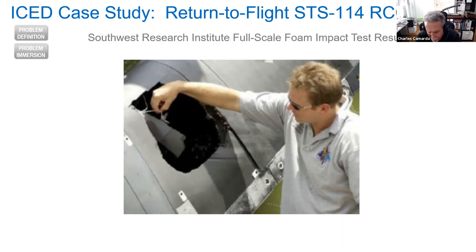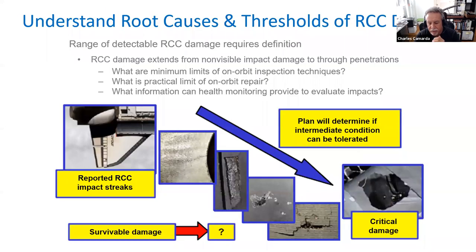If we were going to fly again safely, we had to understand — if we had damage to a wing during the next shuttle mission — how do we repair that wing leading edge? This is a very intense area of heating on the vehicle. It uses a very unique material called reinforced carbon carbon, designed to take temperatures over 3000 degrees Fahrenheit. We look at all the different ways we've had damage in the past: coating chips, small cracks in the skin of the wing leading edge, or a very large hole.